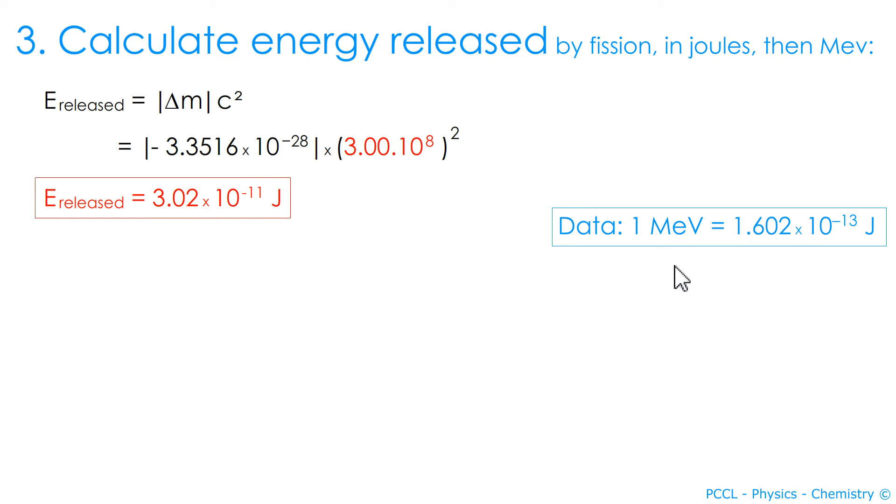Go to MeV, Mega Electron Volt. So, here, I have a relation which allows to go from MeV to Joules. I want to go from Joules to MeV. So, I divide and I find 188 Mega Electron Volts.